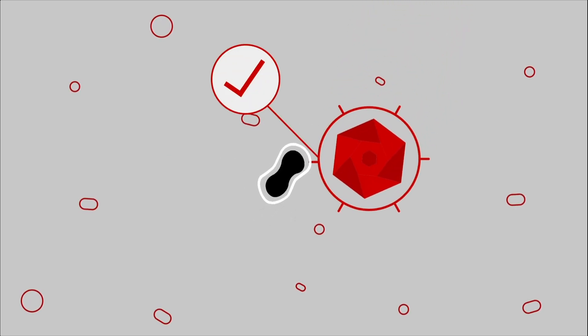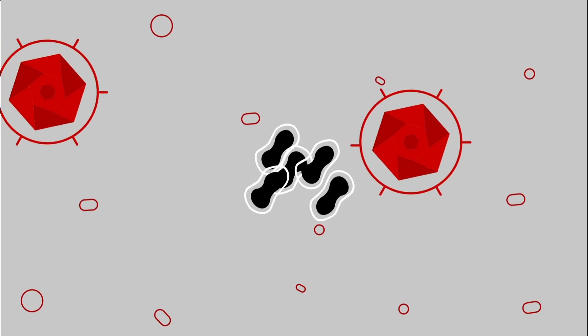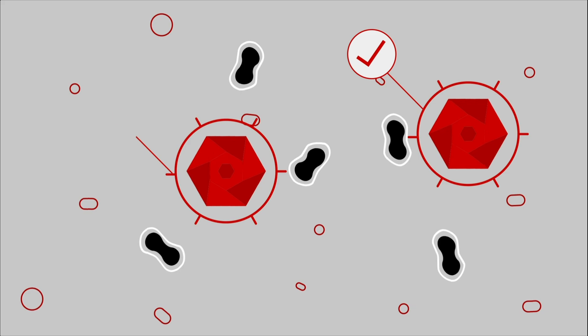The trouble is, cancer is smart. Cancer cells can disguise themselves so our T-cells don't recognize them as foreign. And when that happens, the cancer grows, leaving one of your body's most powerful defenses kind of powerless.